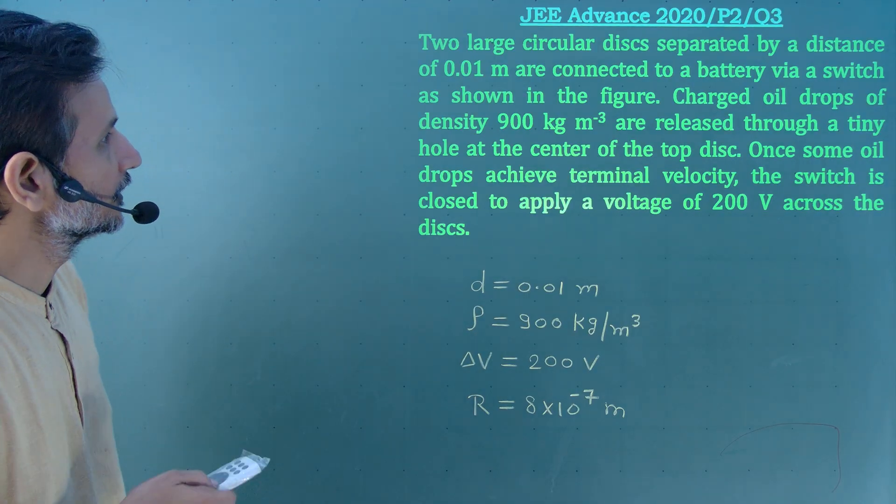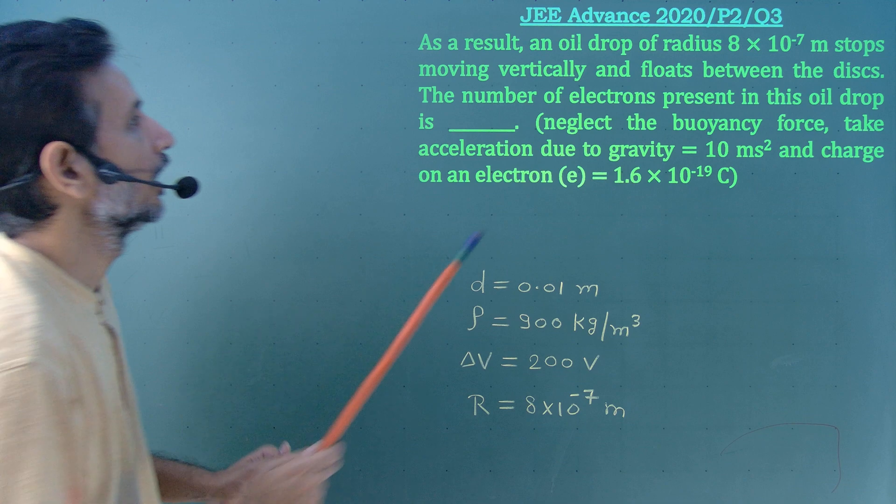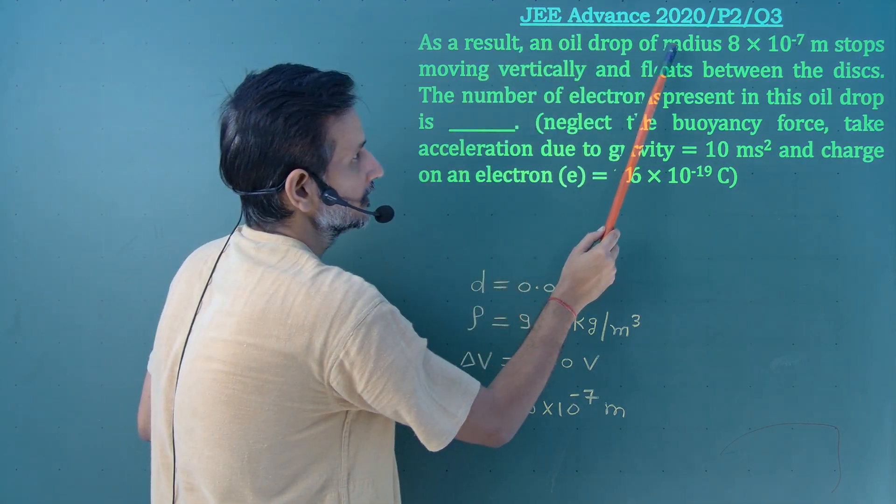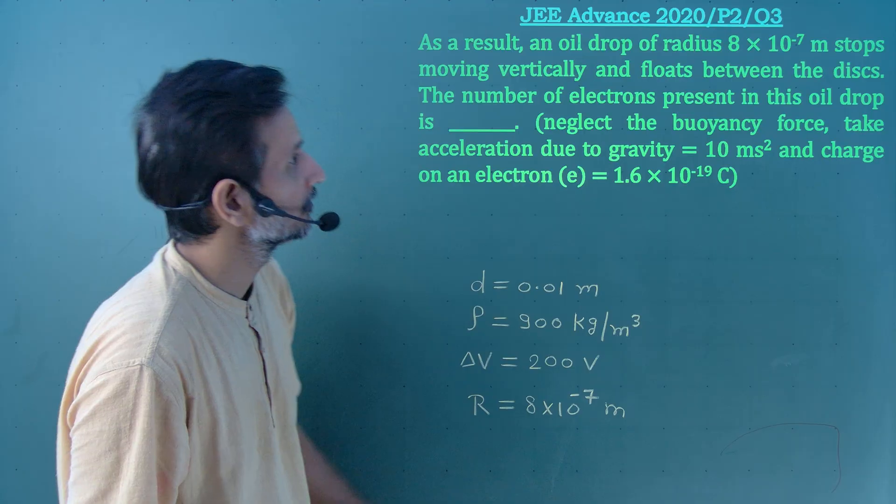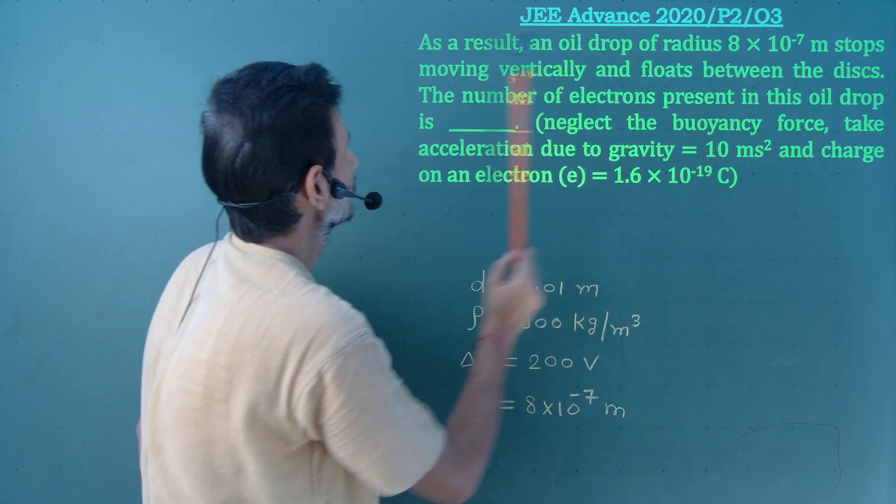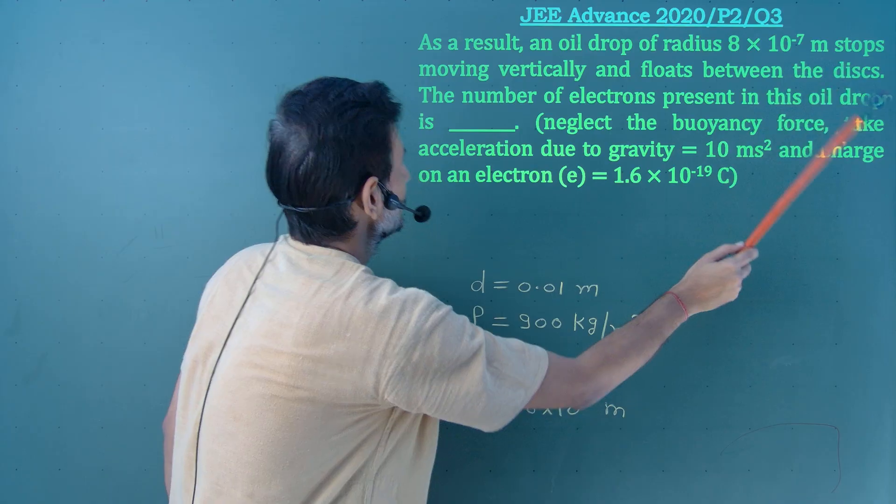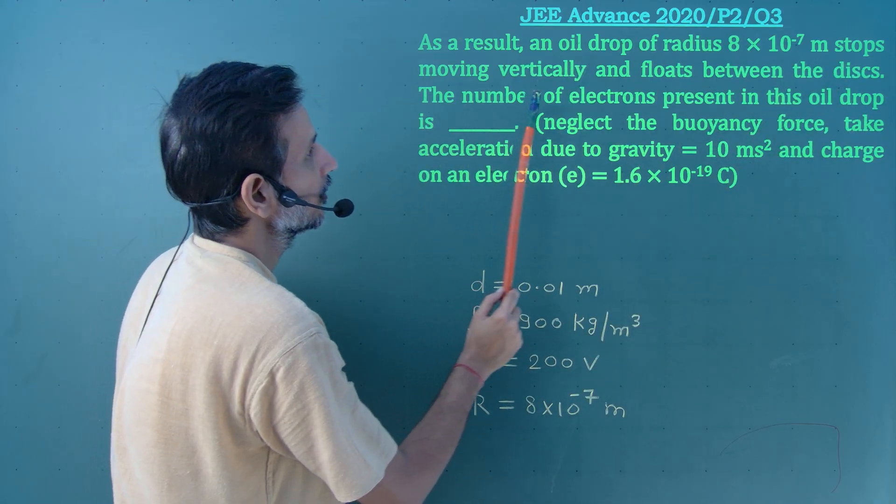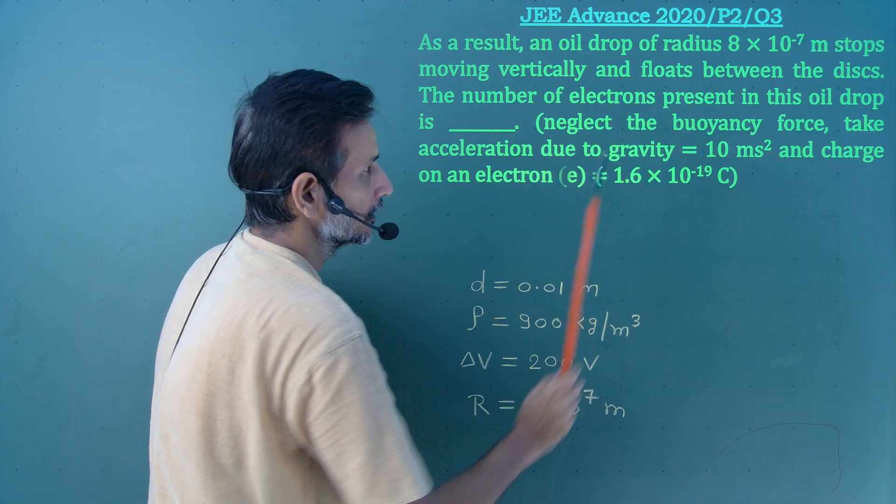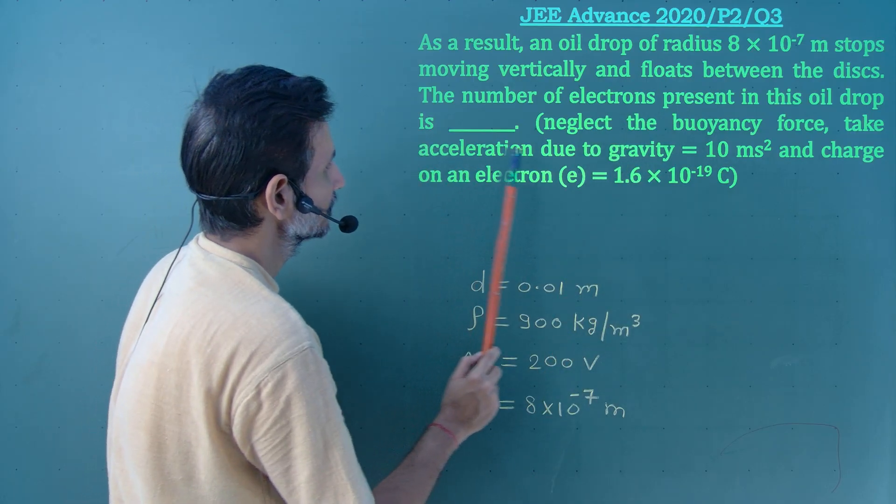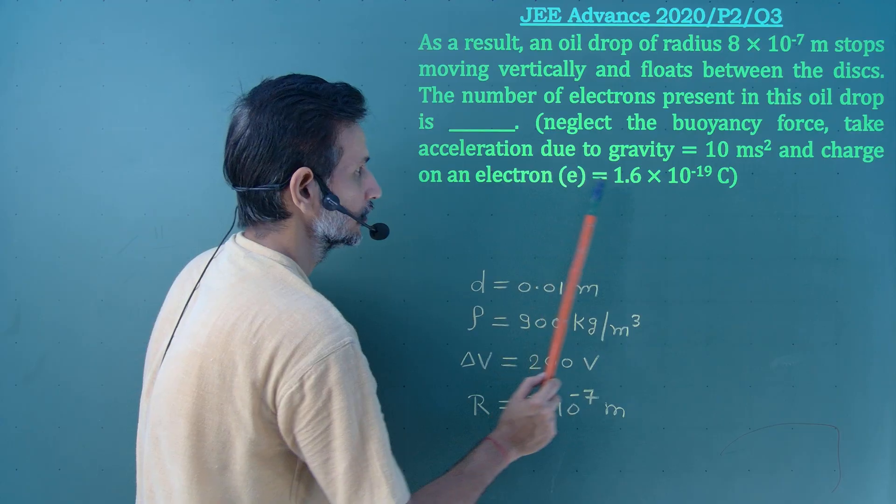Now, the remaining question is: as a result, an oil drop of radius R equal to 8 into 10 to the power minus 7 meter stops moving vertically and floats between the disks. The number of electrons present in this oil drop is... Neglect the buoyancy force, take acceleration due to gravity and charge on an electron as this.